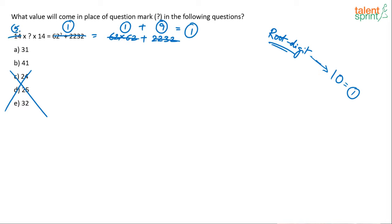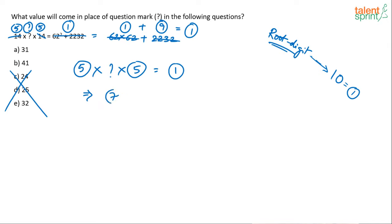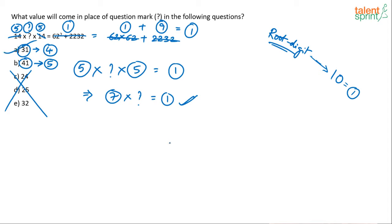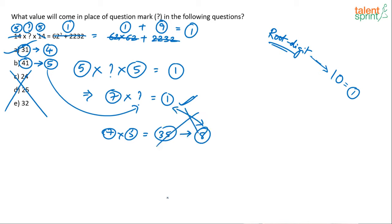Testing option B (41, root digit 5): 7×5=35, root digit 3+5=8. I need 1, not 8 — option B is eliminated. Option A (31) satisfies. So the answer is 31, option A. This took longer to explain than it would take in practice — once you know these techniques and have practiced enough, it happens rapidly. You can also solve it the conventional way: 14×14=196, then compute 62²=3844, add 2232 to get 6076, divide by 196.